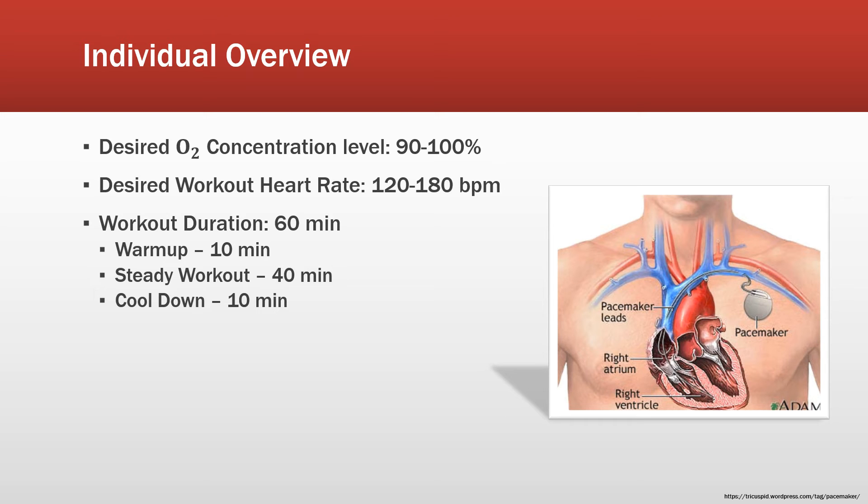With a workout, you want your desired heart rate to be between 120 and 180 beats per minute. So that was another limit that we had to be sure we didn't pass or go below.